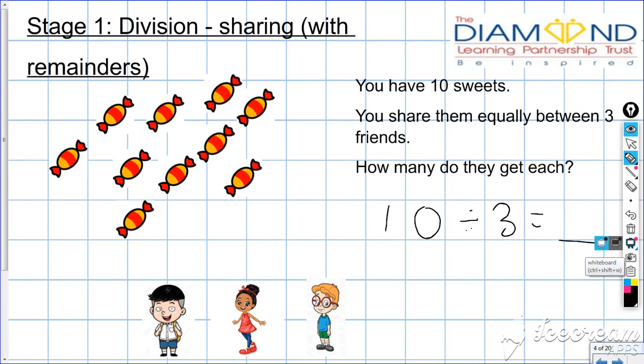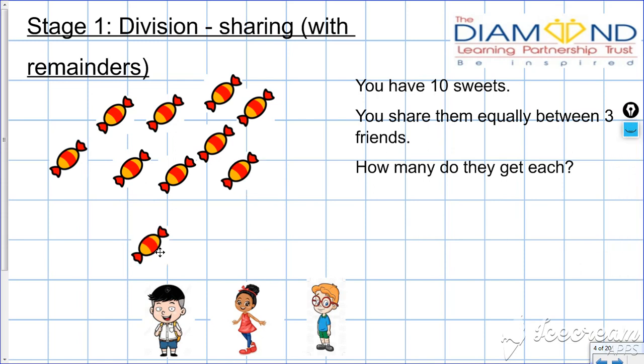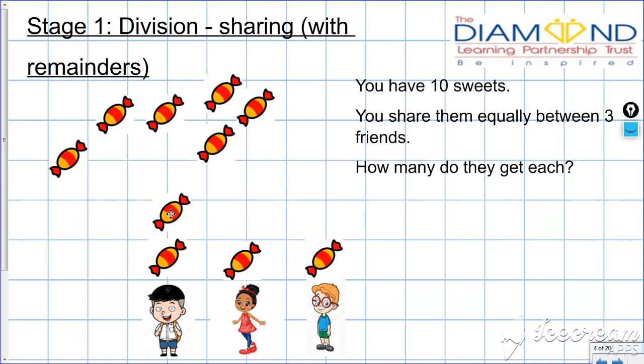So again, we do the same process as the sharing in the last example. We're going to share them one at a time, three to each person. We give one to each person, two to each person, three to each person.